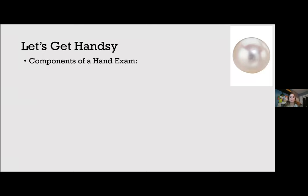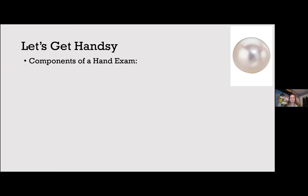Can anyone tell me the brief components of a hand exam? Brandon: look for swelling, erythema, atrophy, deformities such as swan neck or boutonnière deformities, skin changes. Then check the nerves — median, radial, and ulnar. Check for vascular compromise: palpate the radial artery or cap refill. Then palpate for pain to look for possible fractures.